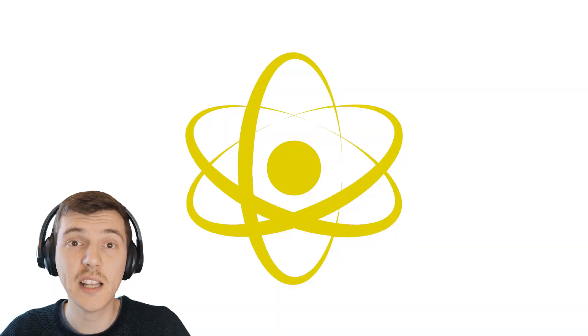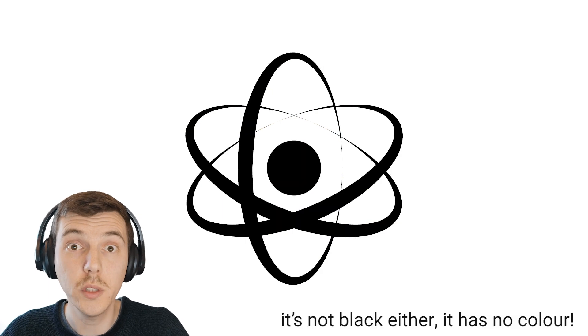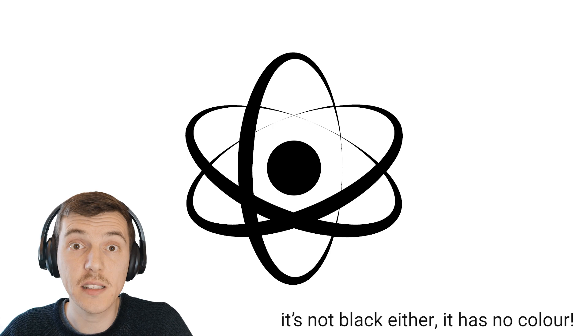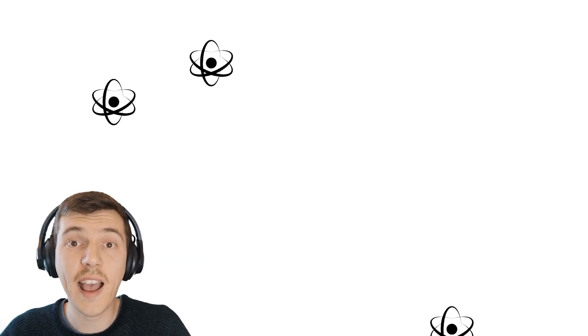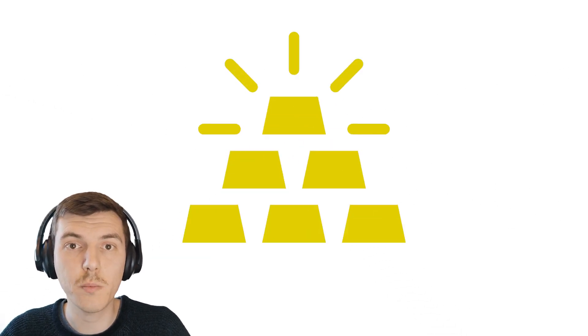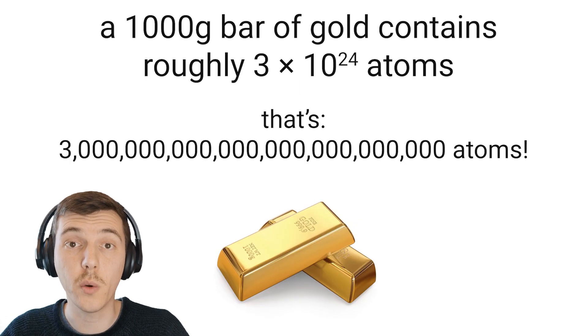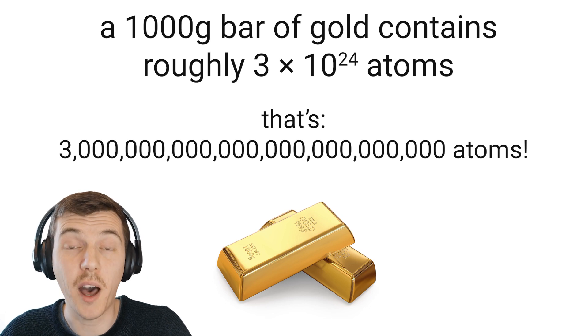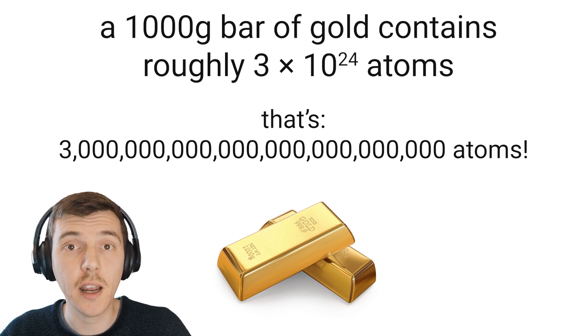One atom on its own doesn't have the same properties of the rest of the element. A gold atom isn't gold. It's not shiny, and it's not a solid, liquid, or a gas. It's just an atom. Bringing lots of atoms together is what creates properties. This bar of gold has a very large number of atoms inside of it, and bringing all of those atoms together is what makes gold a nice, shiny, gold-colored bar, and is what makes it a solid at room temperature.